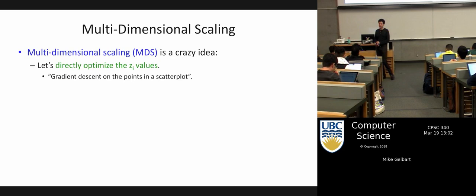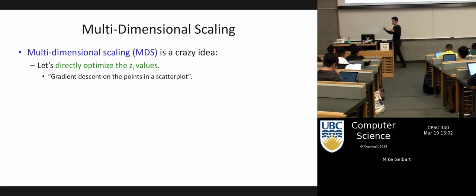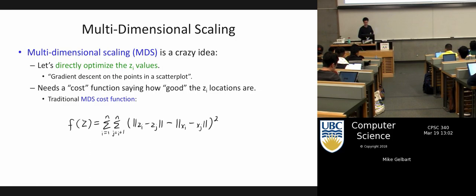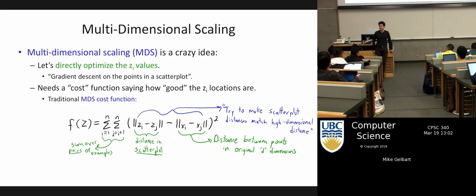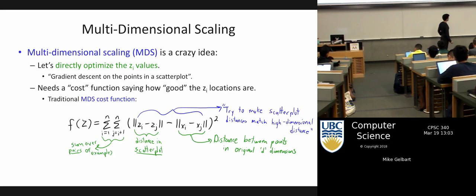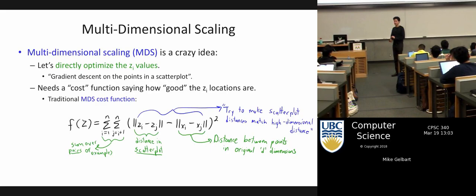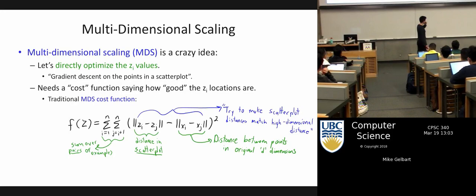The main thing we need to talk about is what would be a good loss function — how do we say that a particular scatterplot is good or not good at visualizing something? The cost functions usually look something like this. This is the first place where you can fall off in this lecture because there's a lot going on in that equation — there are three minus signs. Let's start from the inside out. Our loss function sums over all pairs of points — that's why we have the double sum.